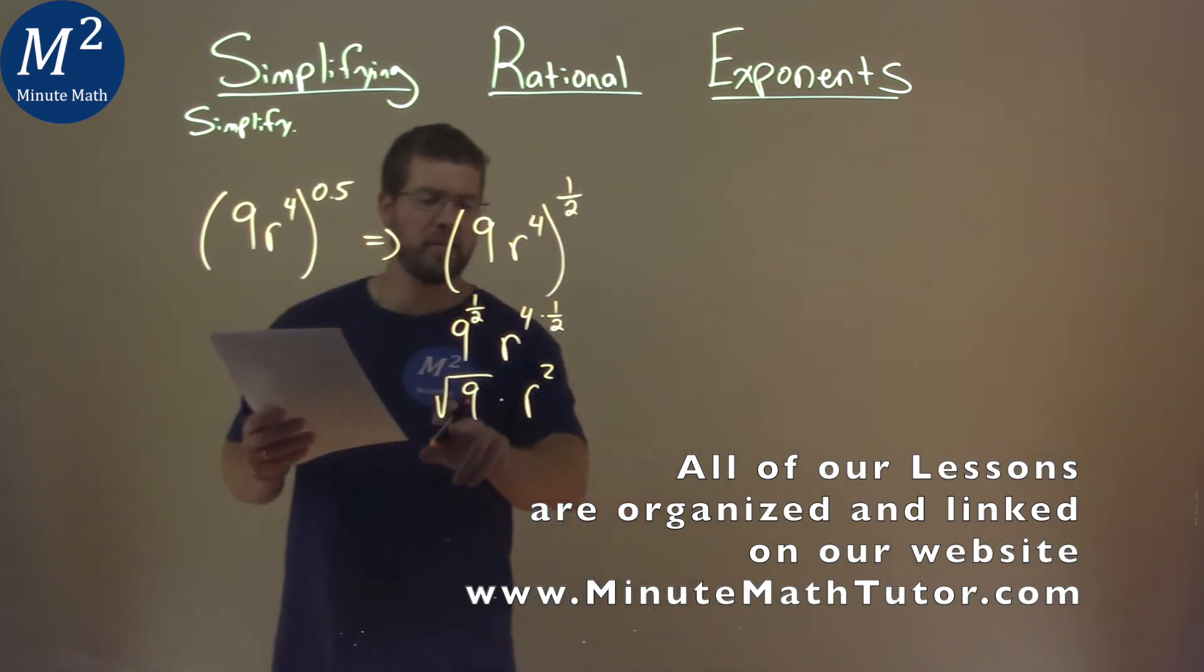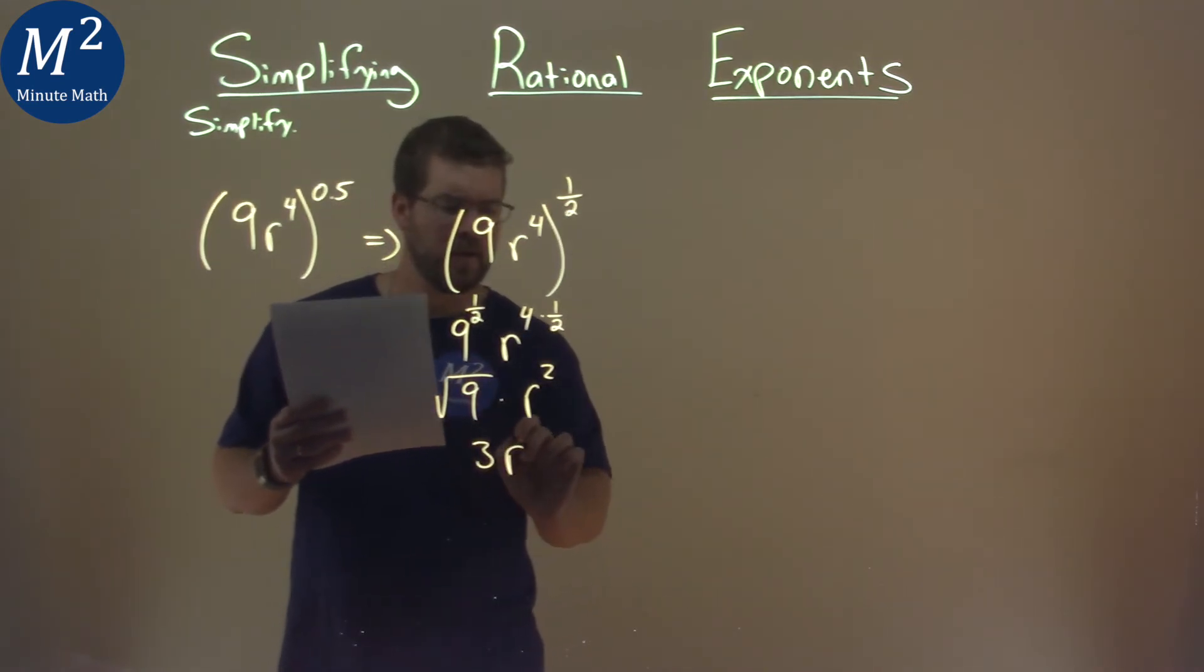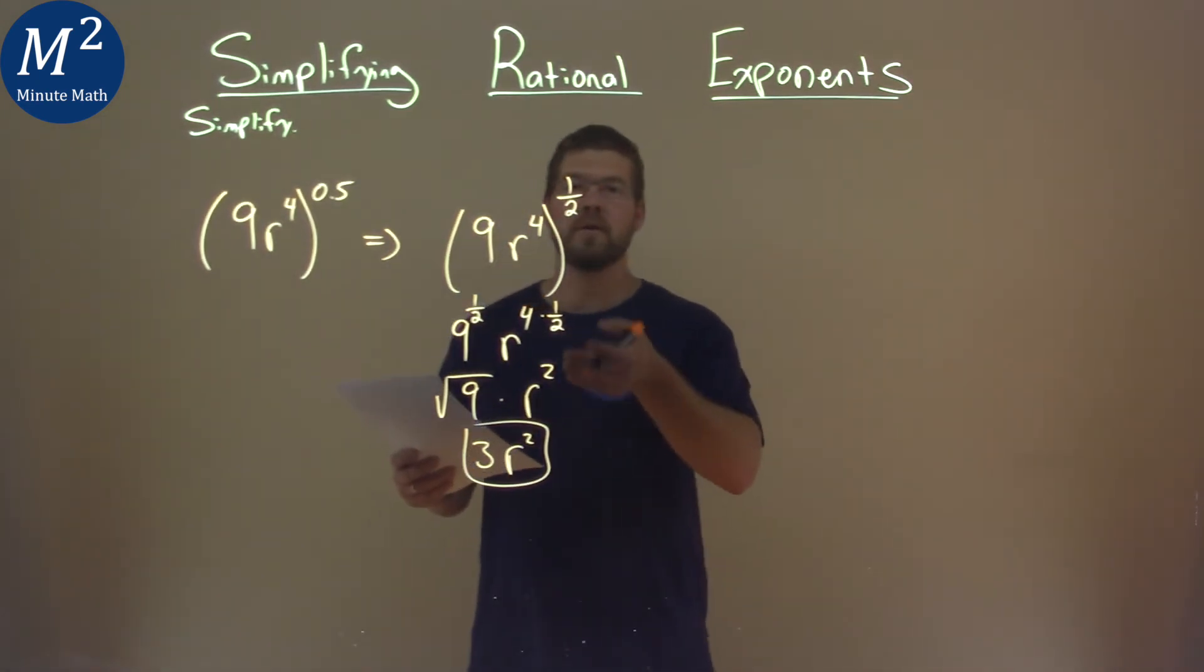Keep on going, square root of 9 is 3, and we have 3r squared. And so our final answer here is just 3r squared.